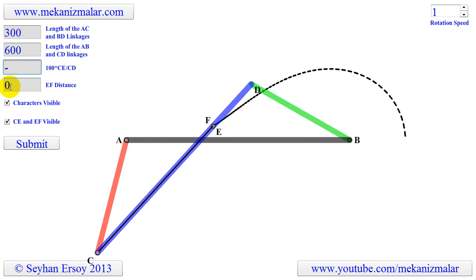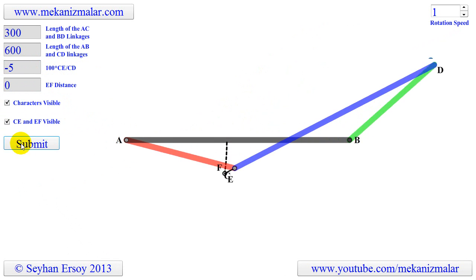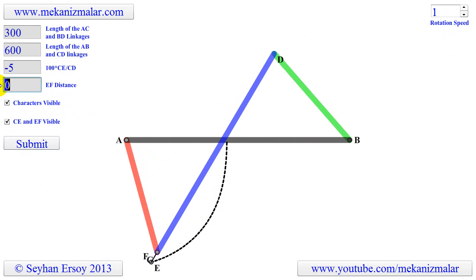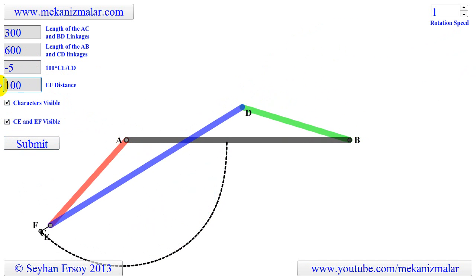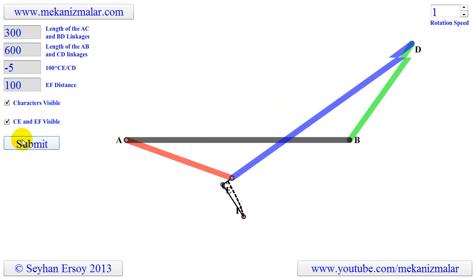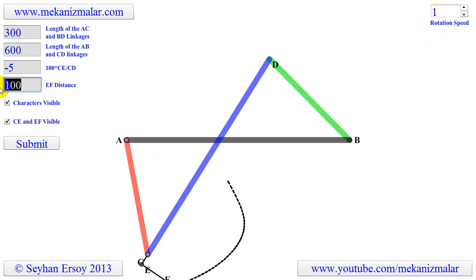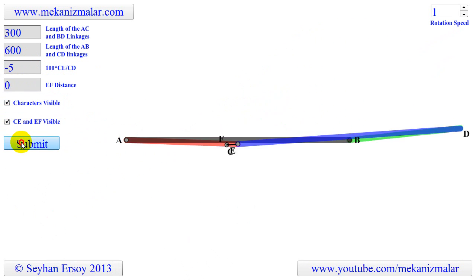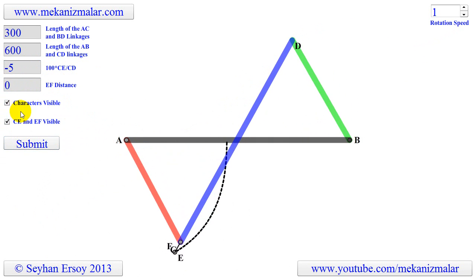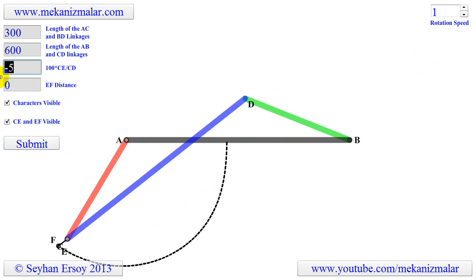The character F represents the location of drawing point. As you can see, it is initially set to 0. In this case E and F overlap. Any positive or negative number takes F away from CD lines such that F is perpendicular to the CD linkage.